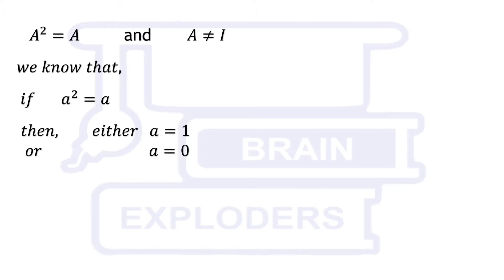That's why we think that if A is not an identity matrix, then A must be a null matrix. But if a condition is added that A is not a null matrix, then it seems to be contradictory.